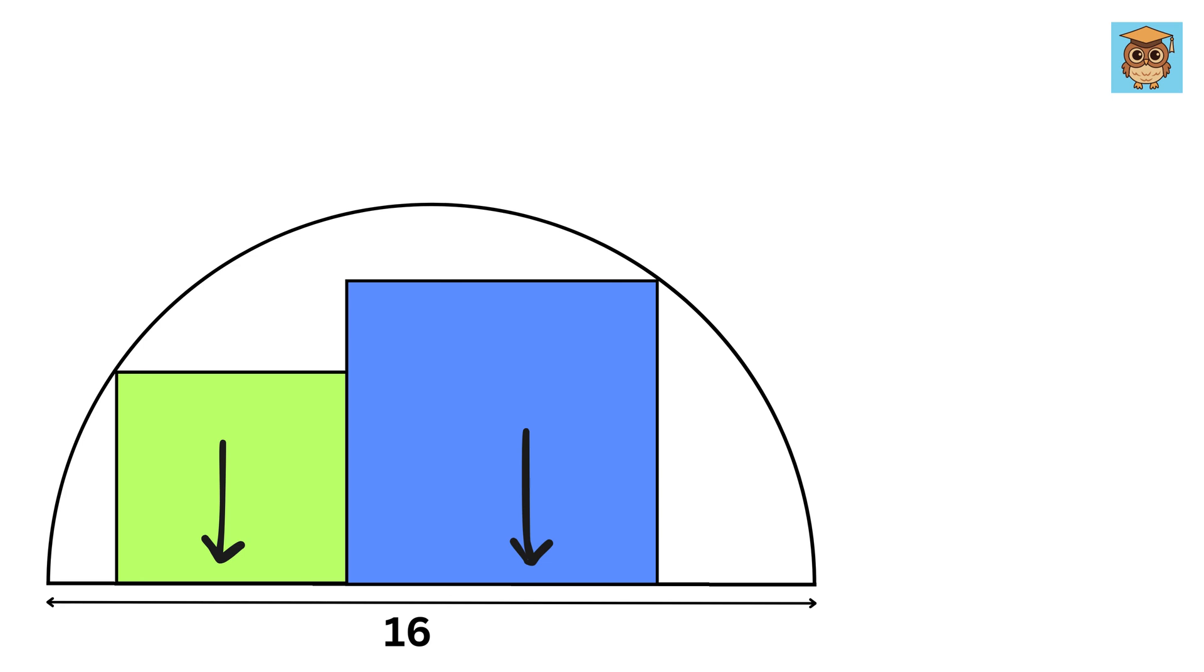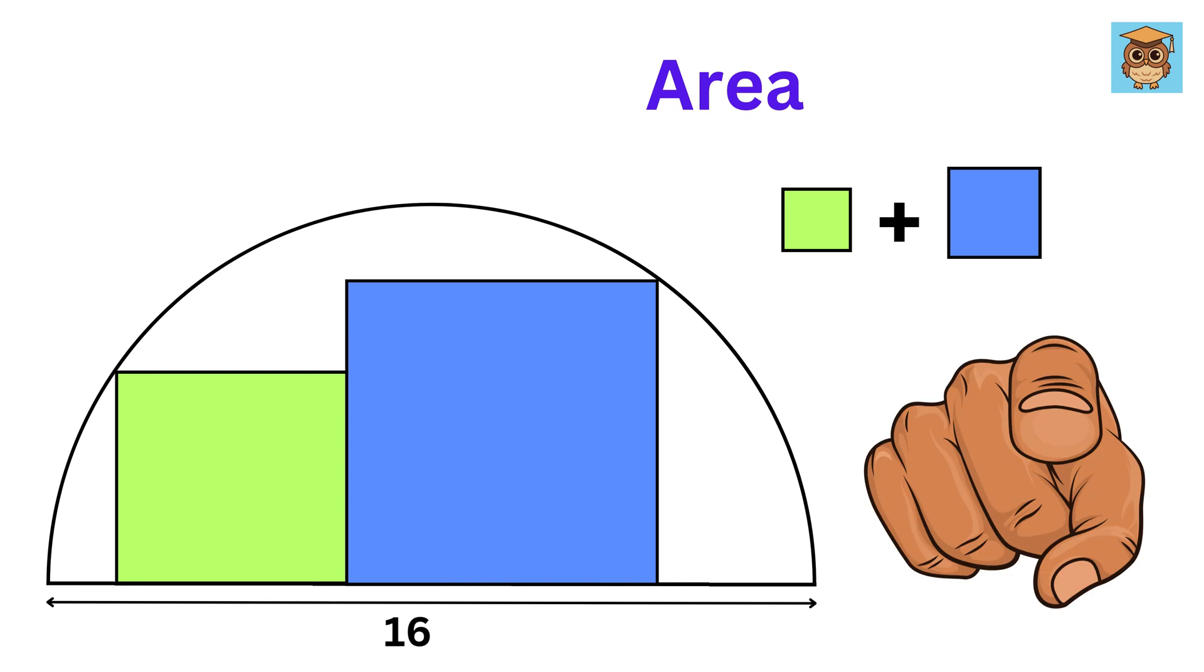We just know that these sides lie on the diameter, and these two vertices touch the boundary of the semicircle. Our job is to find the area of these two squares. So, can you solve it?